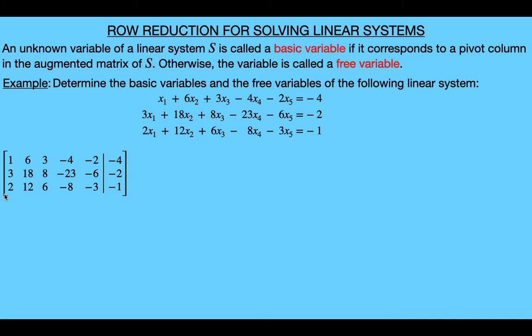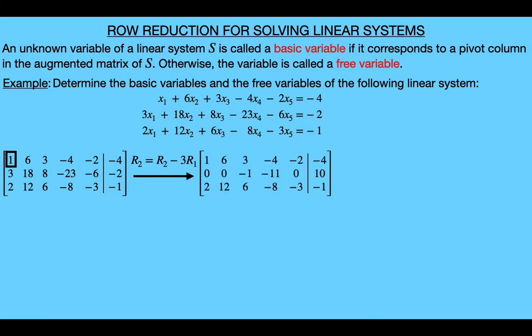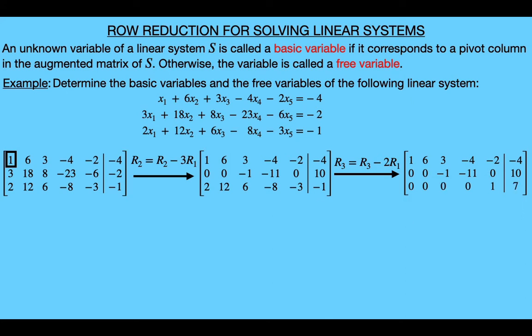Since we have that this column is non-zero, we know that our first pivot position will be located at the top of this column. Now let's select this one that's already in the pivot position to be our pivot, and then we'll use this one to create zeros in the two spots below it. To make this a zero, we'll replace the second row with the sum of itself and negative three times the first row. Then we'll get a new matrix with this new row two. Next, to make this a zero, we'll replace the third row with the sum of itself and negative two times the first row, and that will give us a new matrix with this new row three. So we end up with this matrix in echelon form. And now from here, we could continue row reducing this matrix until we end up with the reduced echelon form, but for the purpose of finding the pivot positions, an echelon form is sufficient.